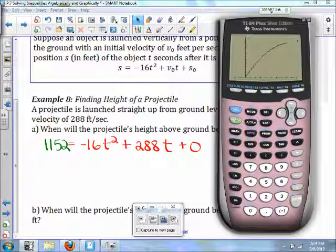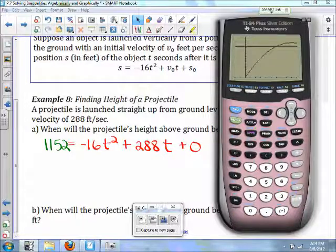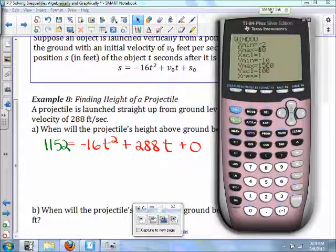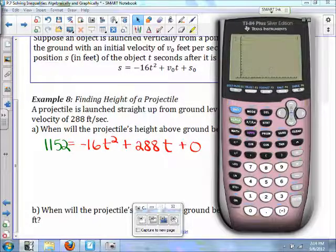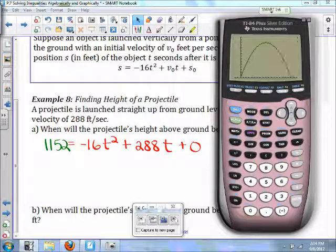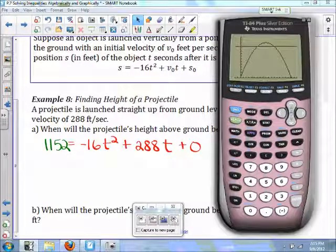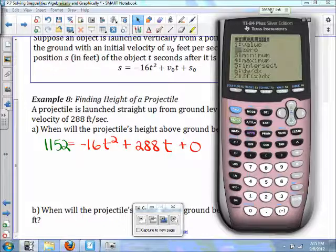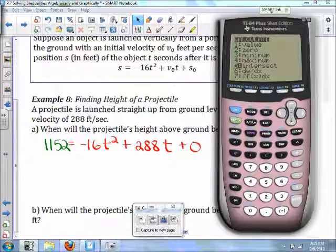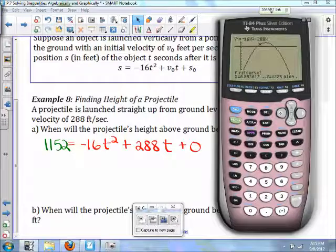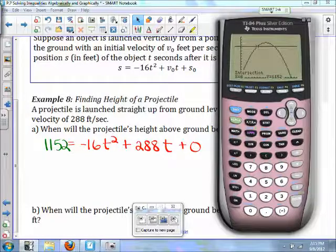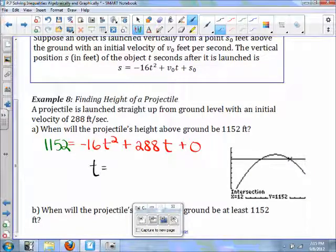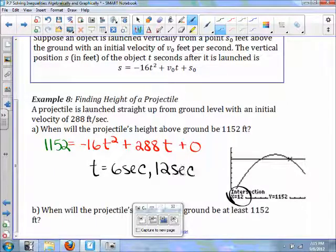So when we graph this, we're going to have to change our time. Our X value here. Let's make this 20 seconds. And there we have it. Where is it going to hit 1152 feet? Well, let's find some intersections. So the second trace number 5. Our first intersection will be at 6 seconds. And if we do it again, you'll see here that our intersection will be 12 seconds.